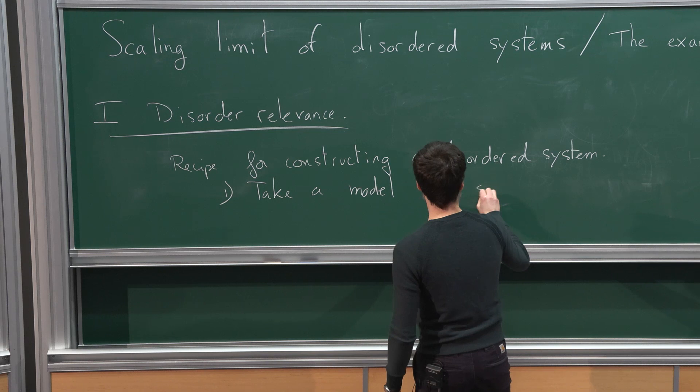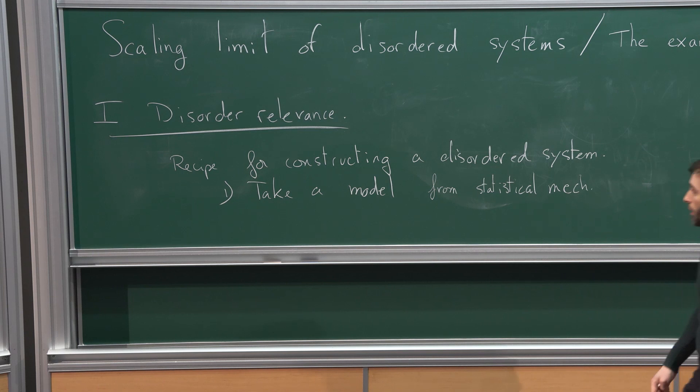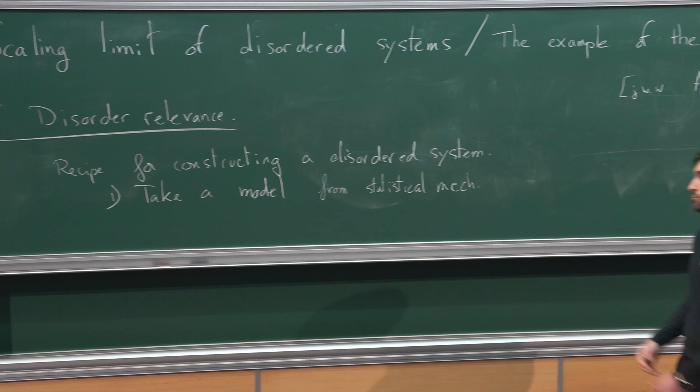You can think about the simplest model of all: the simple random walk, the Ising model, or the Poland-Scheraga model. You just take a system — it's a perfect system, you know everything about it — and then you sprinkle some disorder on it.